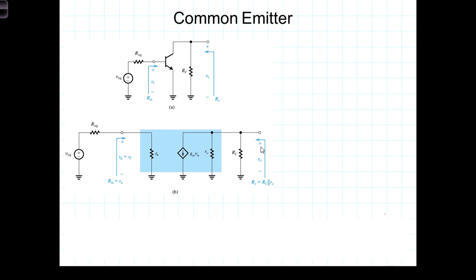We'll first consider the common emitter configuration. Underlying this analysis is the assumption that the transistor has been biased into the active region and that the small signal approximation with the corresponding small signal model and the small signal model parameters R sub pi, R sub e, G sub m, and R zero are all applicable.